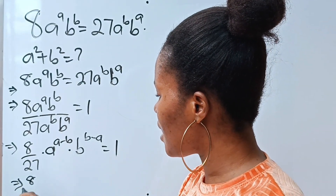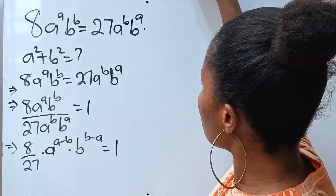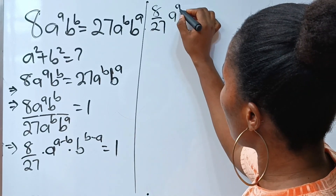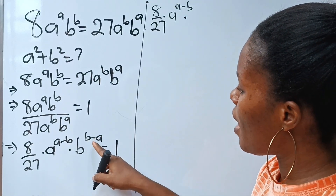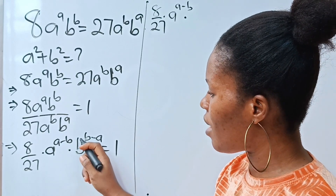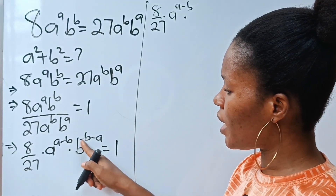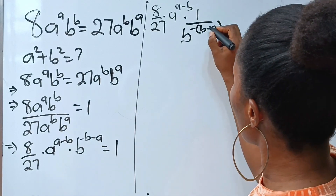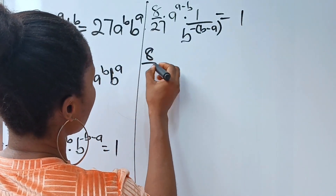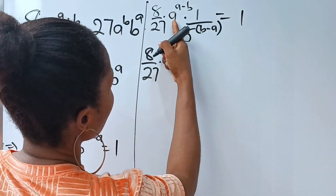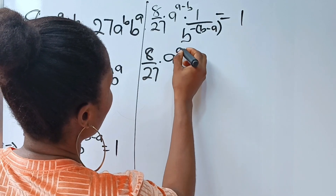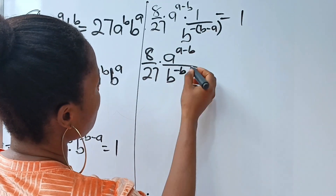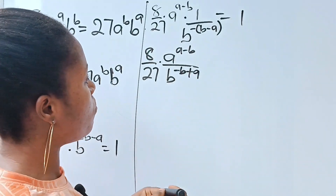So this implies 8 over 27 times a to the power of a minus b, multiplied by — now I want to have a minus b here again, and to do that I need to introduce a negative power. So this becomes 1 over b raised to the power of minus b minus a. What we have now is 8 over 27 times a to the power of a minus b times 1. Then, negative times b gives minus b, and negative times minus a gives plus a, so this is also a minus b.